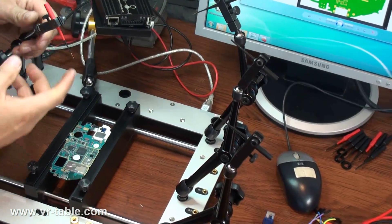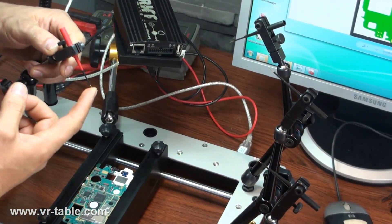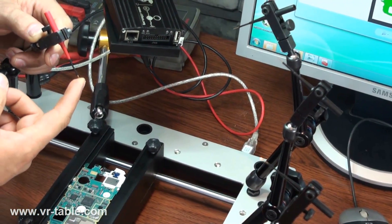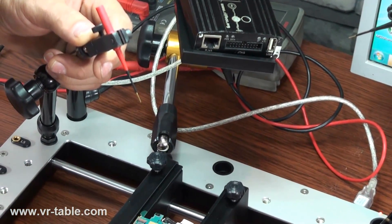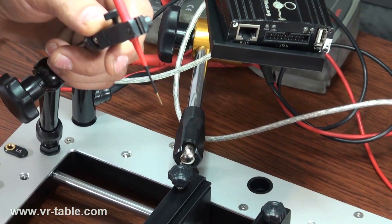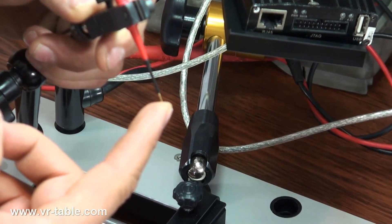Now we start to mount probes into the VR arms. These are new probes which are available now from your VR table reseller. The new probes have movable tips which were specially created for eMMC ISP operation.